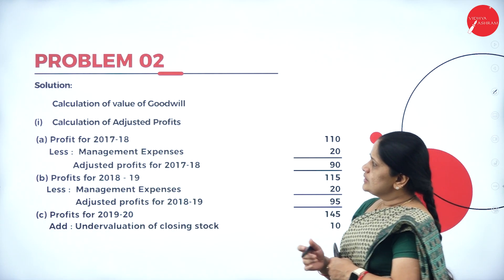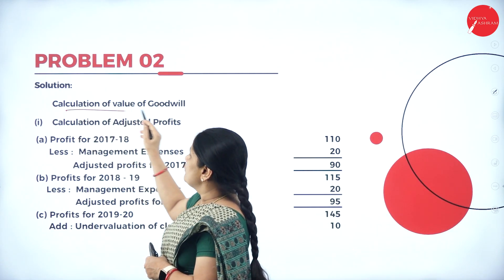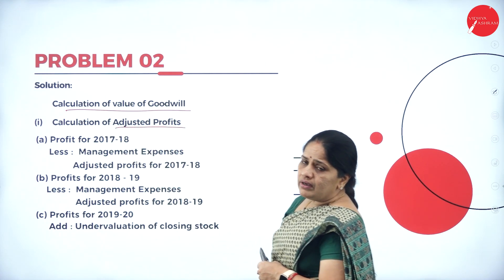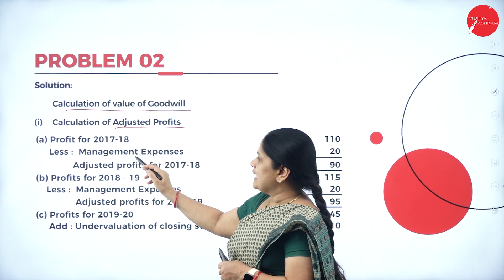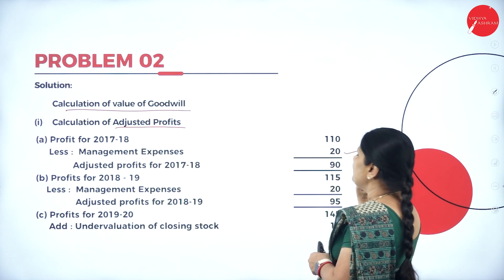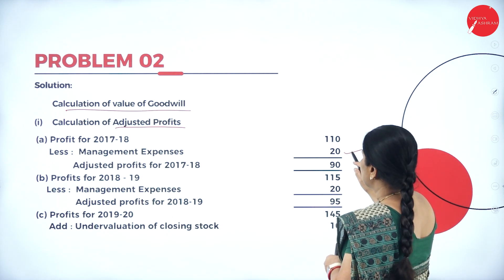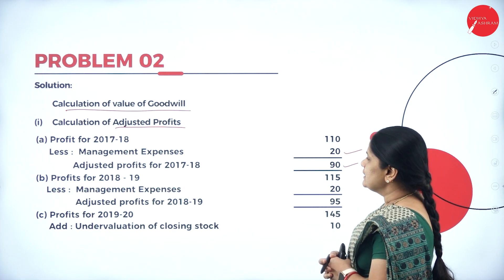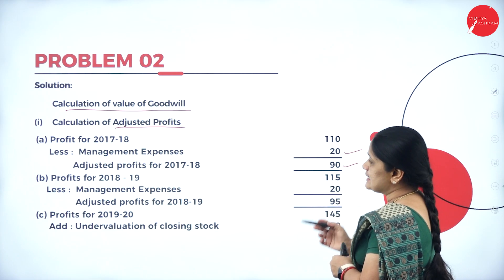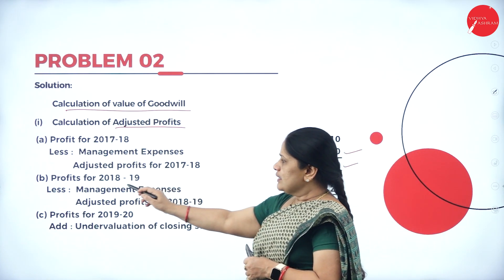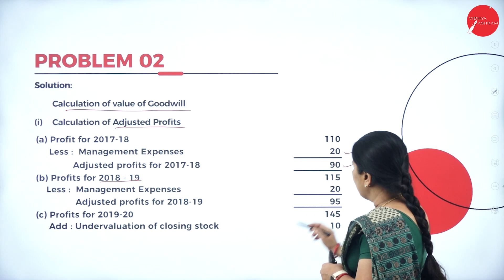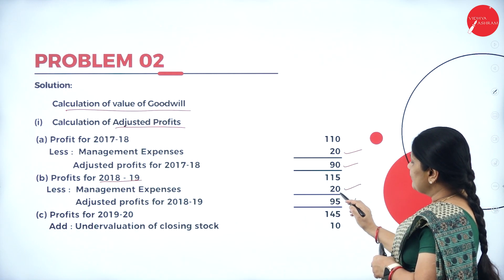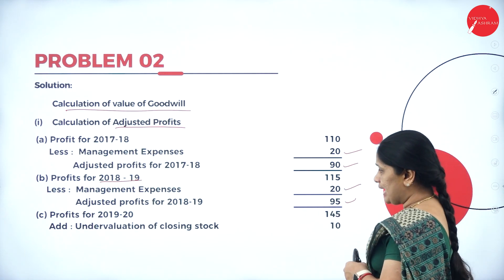For the calculation of goodwill, the first thing we need is the adjusted profit. For the profits of 2017-18, we deduct only the management expenses of 20 lakhs, giving an adjusted profit of 90 lakhs. For 2018-19, again reducing only 20 lakhs because there are no other adjustments — from 115 lakhs I deduct 20 lakhs to get 95 lakhs.